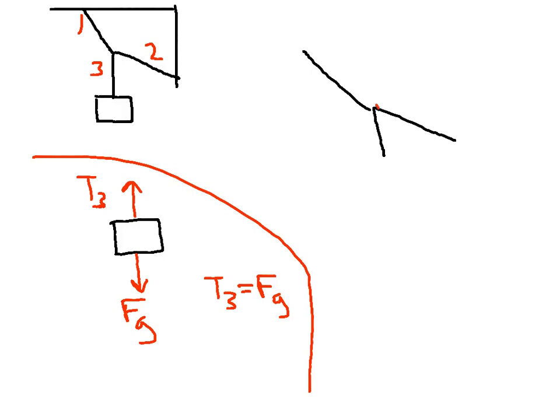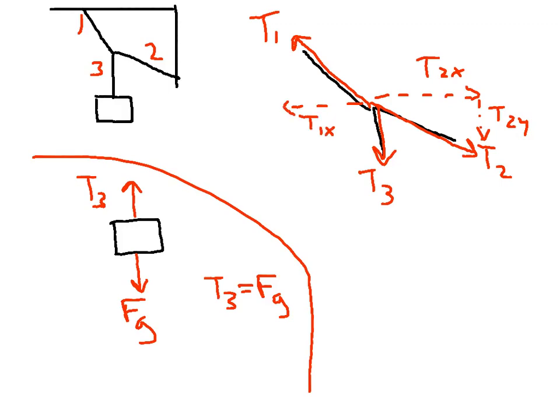Now for the knot, we have T3 going down. We have T2 going off at an angle here, and we have T1 going up this way. Okay, now we have to find the components of the ones that are not in the X and Y directions. So T2X is going to point off this way. T2Y is going to be down in this case. T1X will be over this way. T1Y up here. Now we'll need this angle theta and this angle theta. Let's call this one theta 2 and that theta 1.